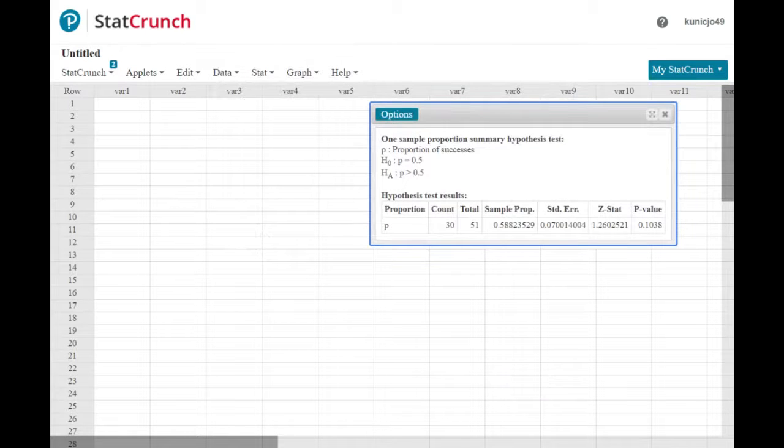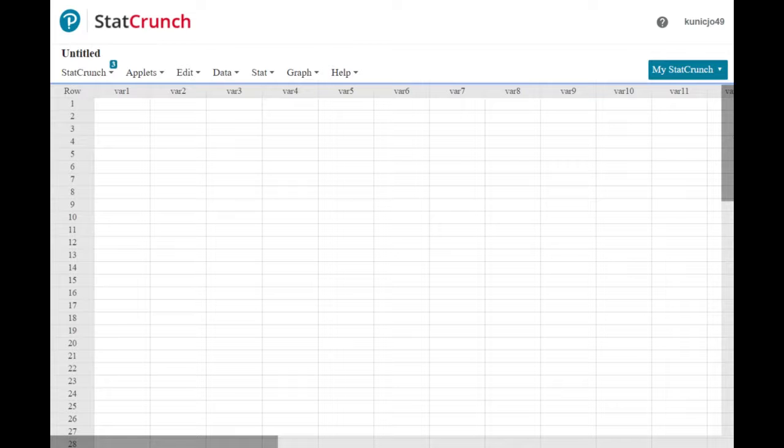So the test statistic is 1.26. All right, some more decimal places, but they'll probably want two, so 1.260205. Notice the p-value is, we're not going to be rejecting, we're going to be accepting. At any rate, we'll get to that here shortly when we get back to the problem.